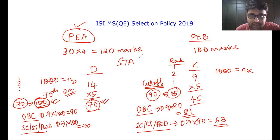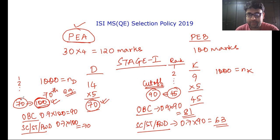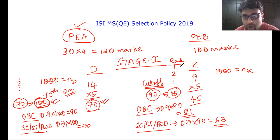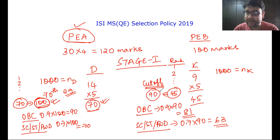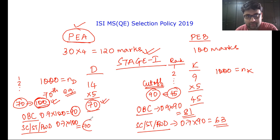I have only covered stage 1 right now. To recap: top 70 will be shortlisted for ISI Delhi in the general category, and top 45 will be shortlisted for ISI Kolkata in the general category. Stage 1 is over. OBC, SC, ST, and PWD candidates are shortlisted accordingly based on their respective cutoffs. Whoever clears these cutoffs will be selected for the next stage.